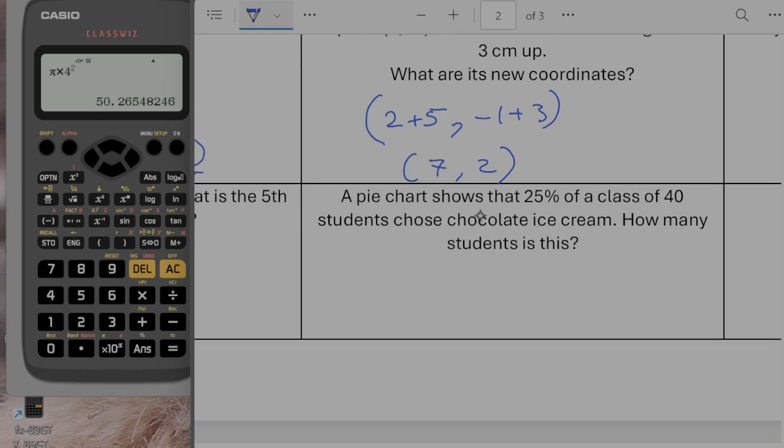A pie chart shows that 25% of a class of 40 students chose chocolate ice cream. How many students is this? So I want 25% of 40 so I can just halve it twice. So that's going to be 10 students.